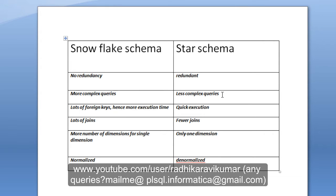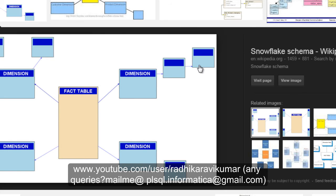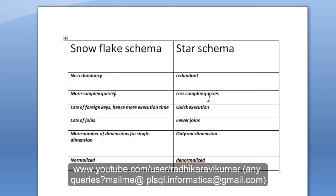The third point is that in the snowflake schema there are lots of foreign keys, so the execution time will be more. Because it is in normalized form, the primary key of one table becomes a foreign key in another, and writing complex queries increases execution time significantly. In the star schema, queries are very simple so execution is quick. Related to this, the fourth point is that snowflake schema has lots of joins, while the star schema uses fewer joins due to its simpler query structure.